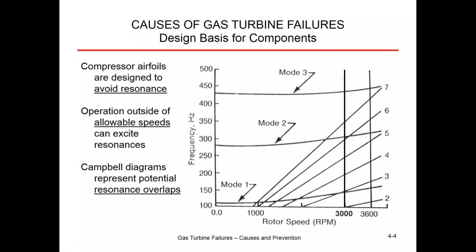Where this all goes wrong is if you're running at a restricted speed. In the power industry we're in pretty good shape because we usually have defined RPMs — 3000 or 3600. But in the flight industry or the mechanical drive industry, you can have a much broader range of speeds. You want to run only in the allowable speed ranges and avoid the prohibited speed ranges, because those prohibited speeds exist due to potential resonance interactions on the Campbell diagram. From a failure analysis point of view, these diagrams are very useful for figuring out what may have gone wrong and why a part may have broken.